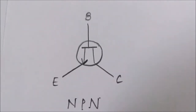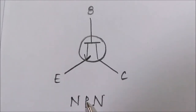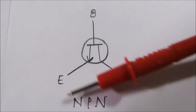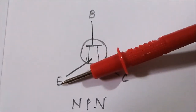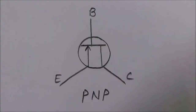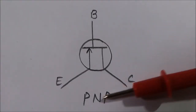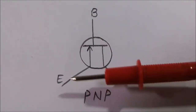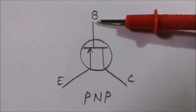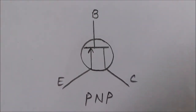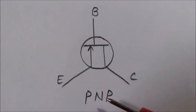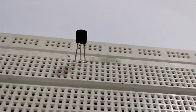In an NPN transistor, P-type semiconductor is sandwiched between N-type semiconductor. The NPN transistor has three terminals — collector, base, and emitter — and the arrow sign points towards the emitter. Similarly, the PNP transistor also has three terminals — collector, base, and emitter — but the arrow sign points towards the base. In PNP type, N-type semiconductor is sandwiched between P-type semiconductor.